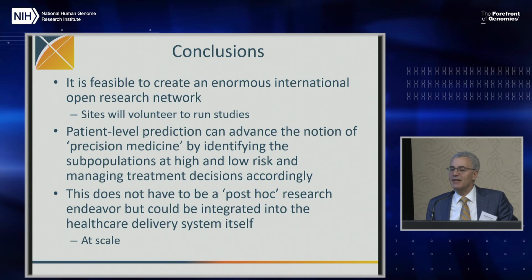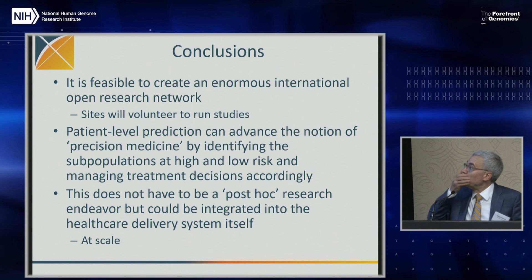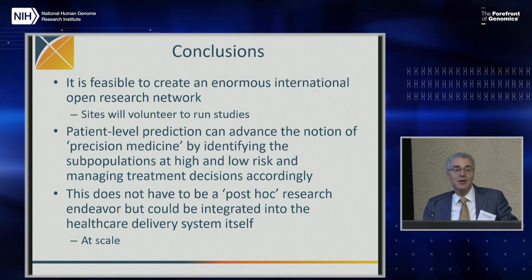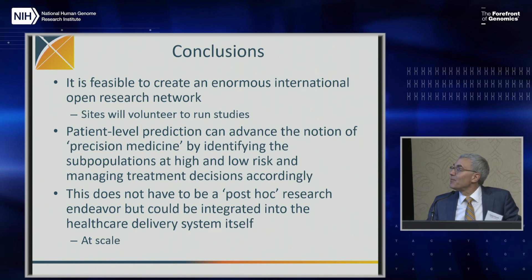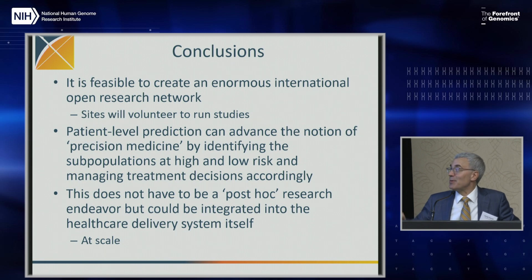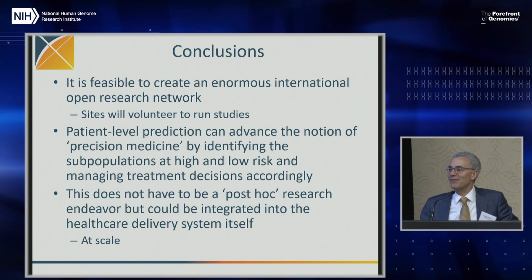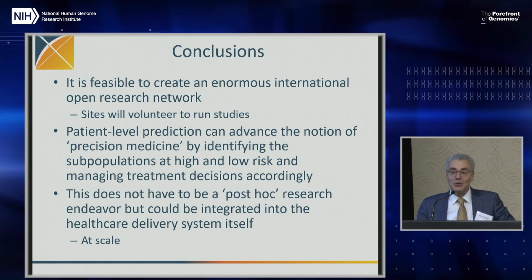Conclusions: it's feasible to create an enormous international research network where sites will volunteer to run studies, largely without direct payment. Patient-level prediction can advance precision medicine by identifying subpopulations at high or low risk. And as was pointed out in the early talks today, this doesn't have to be post-hoc research — it can be integrated into a healthcare delivery system. The hard part is integrating into the healthcare delivery system, deciding which models should be used. That's where a lot of the work has to be done.